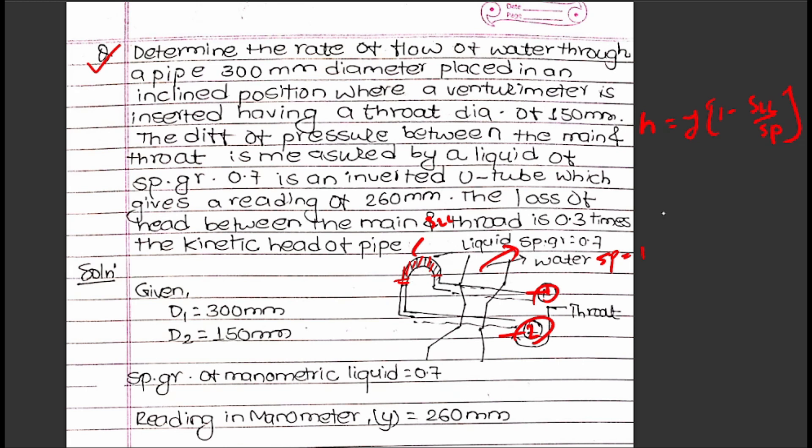The formula is h = (s_l/s_p - 1) times the reading, where s_l is the specific gravity of the liquid in the manometer. The specific gravity given is 0.7.